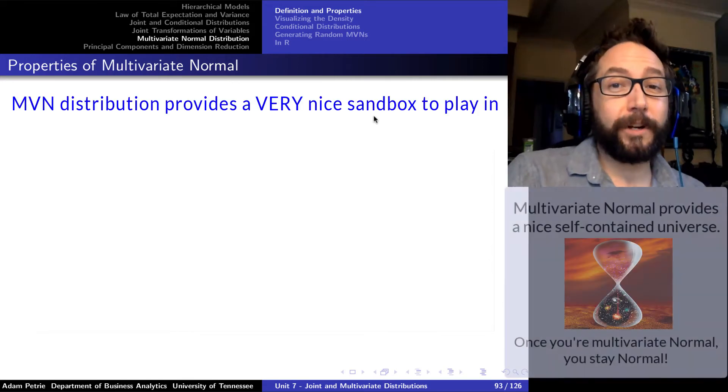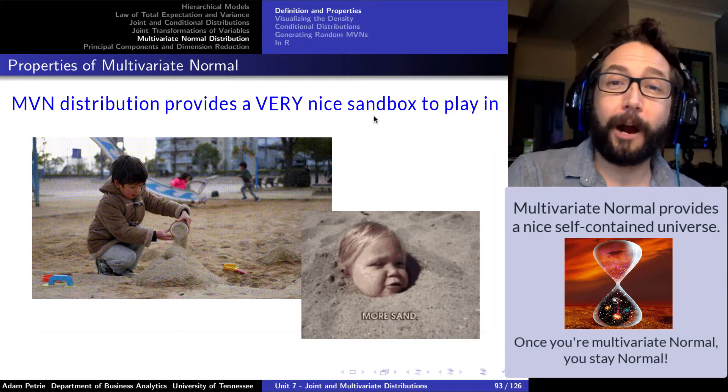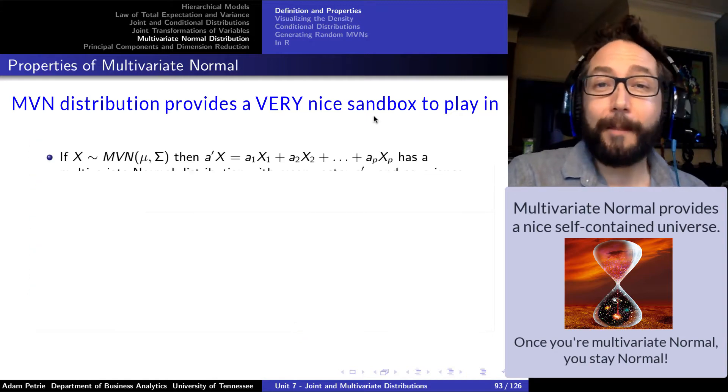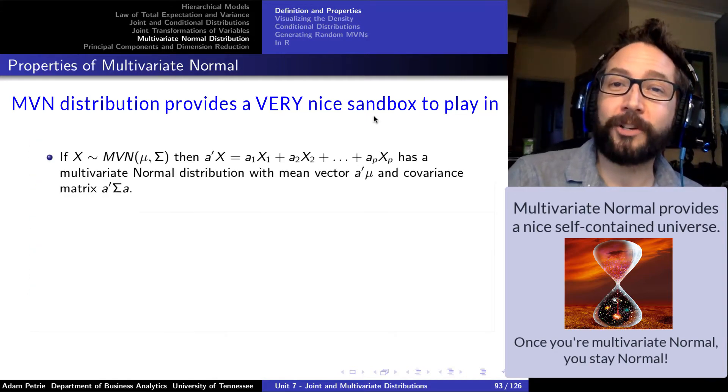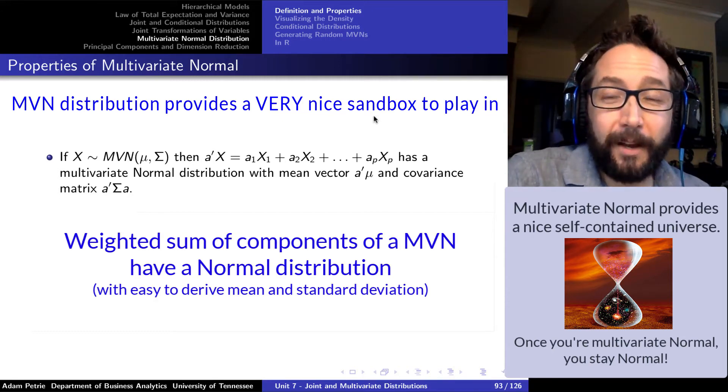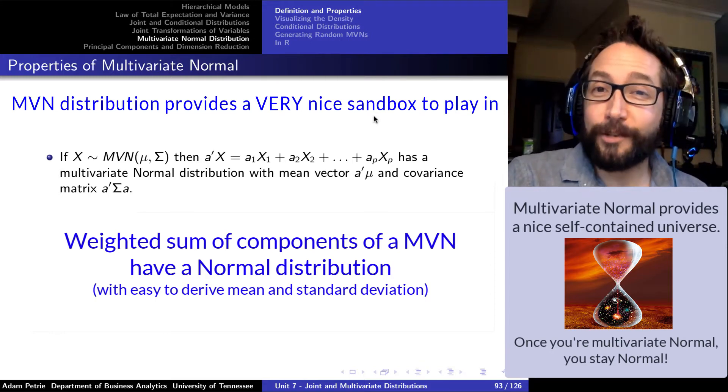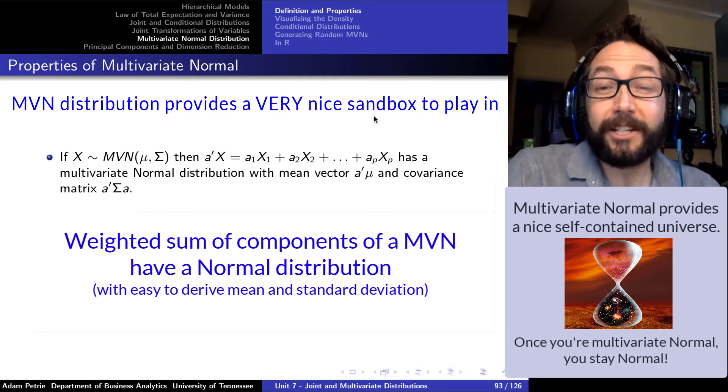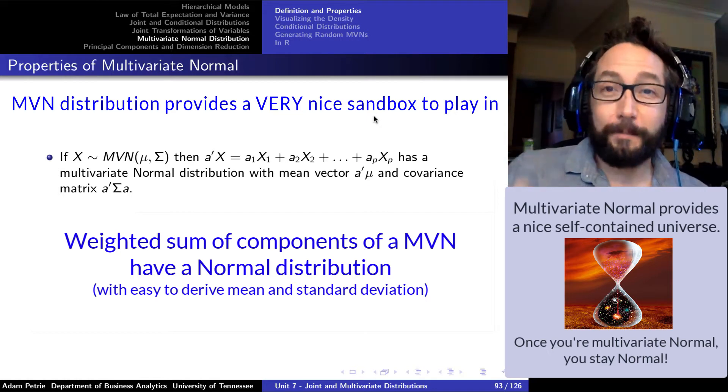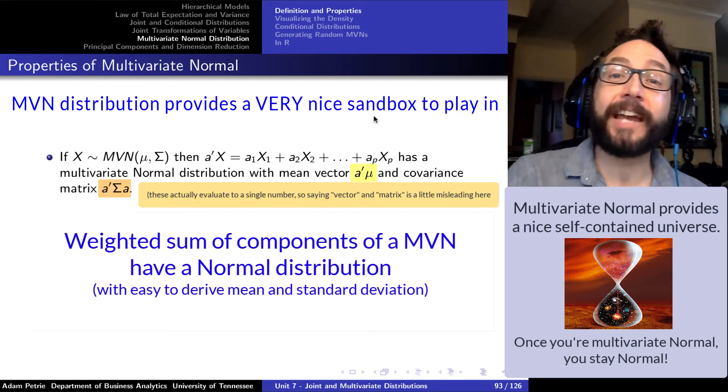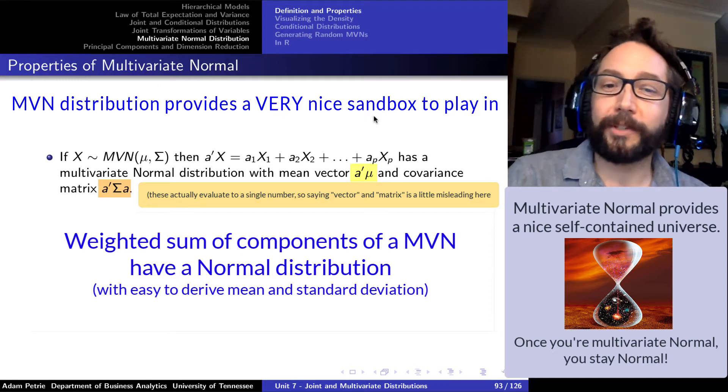One reason we like working with a multivariate normal is that it has a lot of really cool and helpful properties. So if we have a combination of values x that does have a multivariate normal distribution, then if I look at any sort of weighted sum of those random components, I can immediately write down what the distribution is of that weighted sum. It's going to be a normal distribution, a univariate normal distribution, with a mean that I can derive and a standard deviation that I can derive from the mu and the sigma matrices of that multivariate normal.